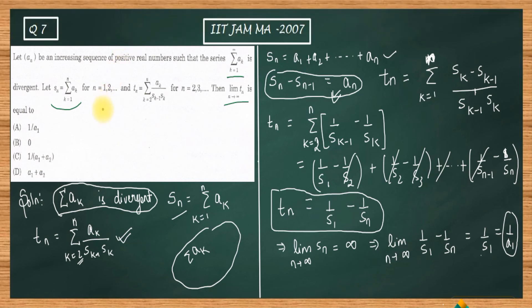So option A — which gives 1/a₁ — is correct. Options B, C, and D are incorrect. Keep in mind that aₙ is a positive sequence of real numbers. This is a straightforward question that can be done in two to three minutes if you know the telescoping trick, or five to six minutes otherwise. Thank you.